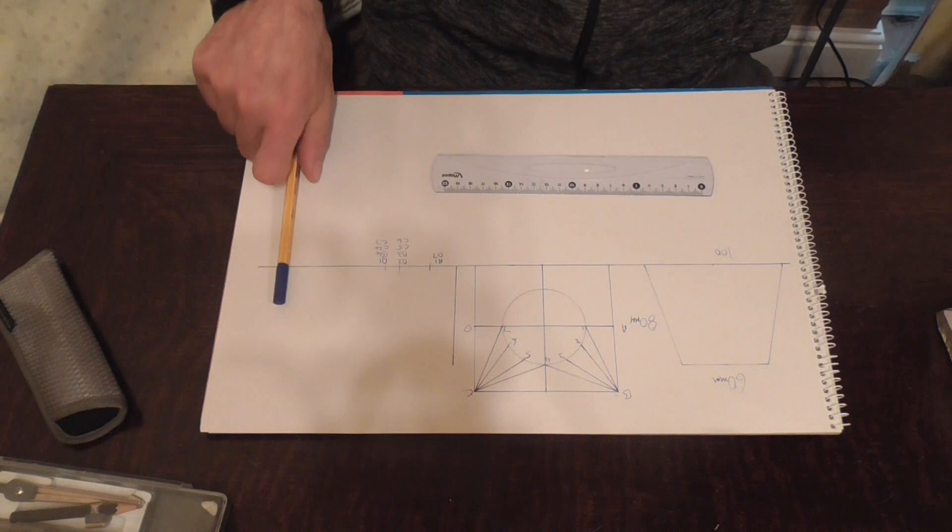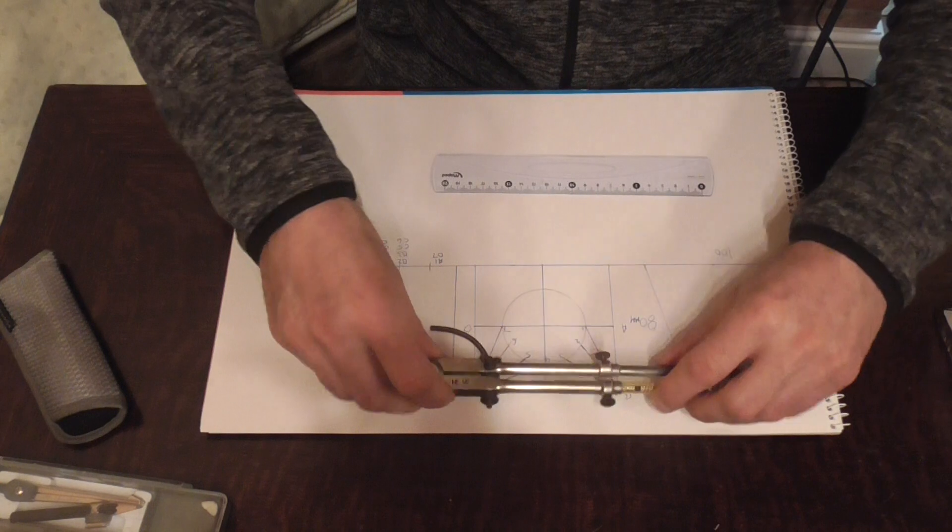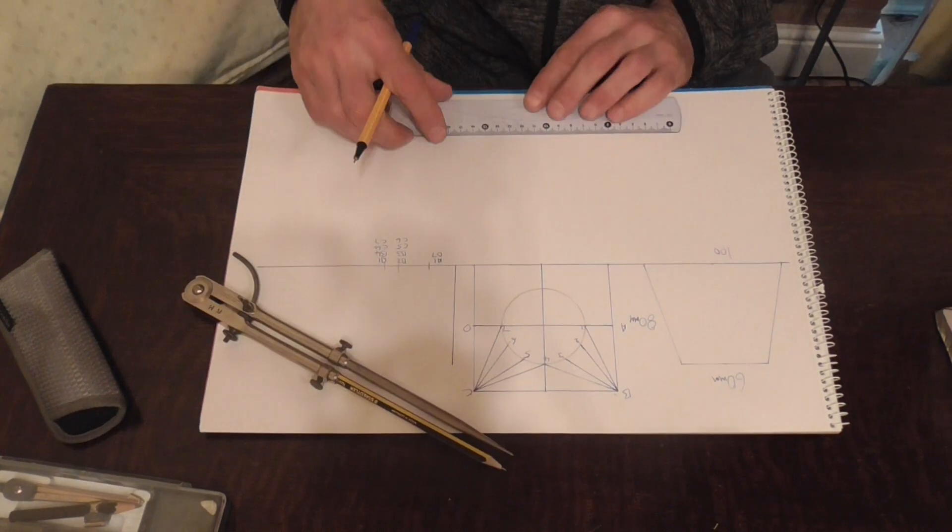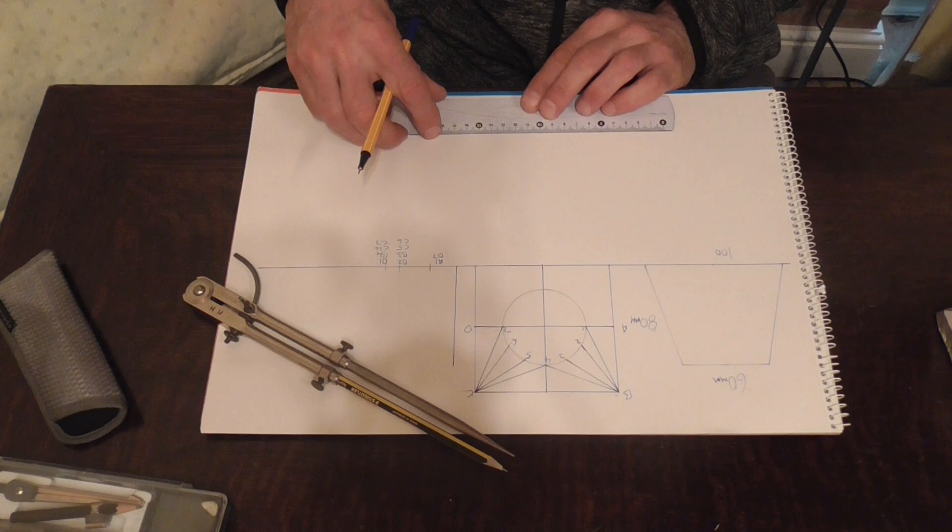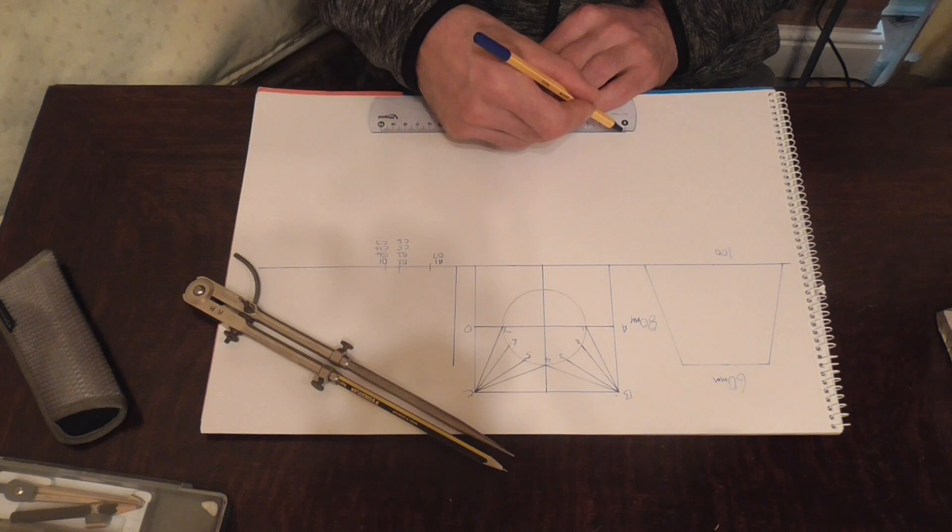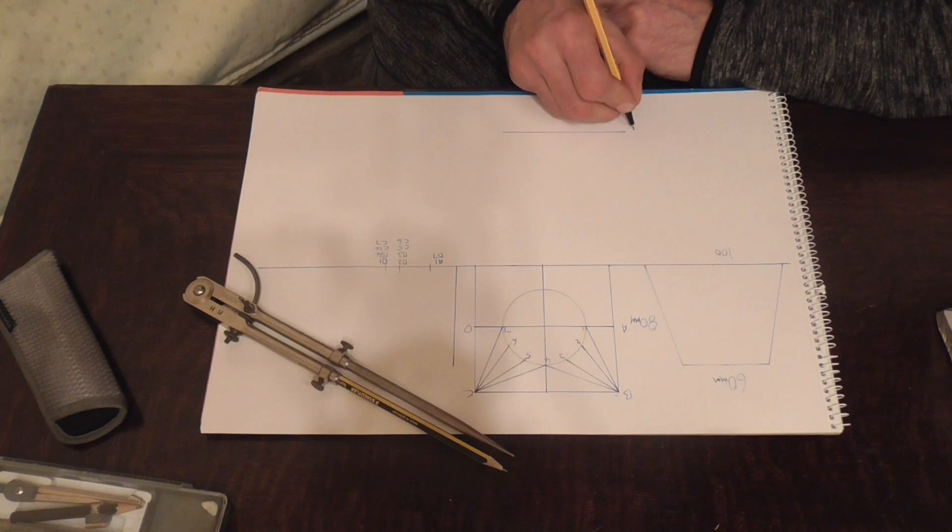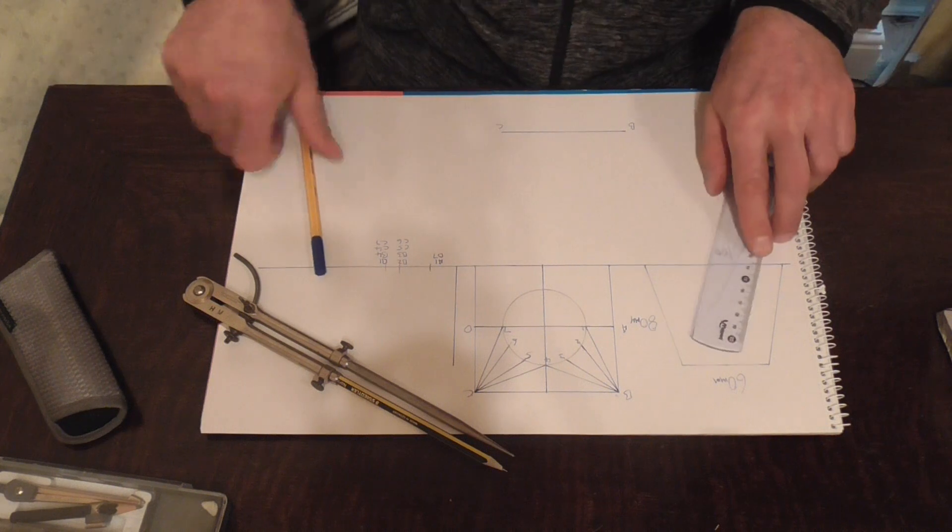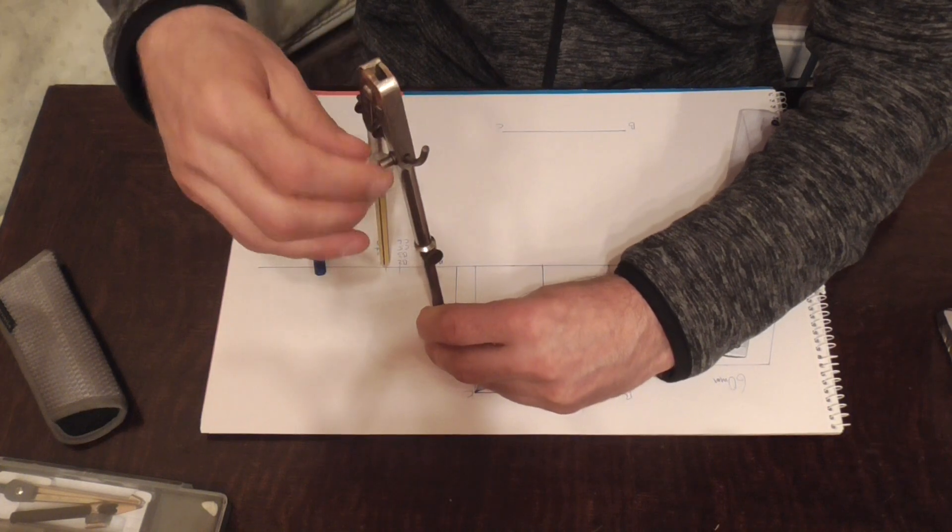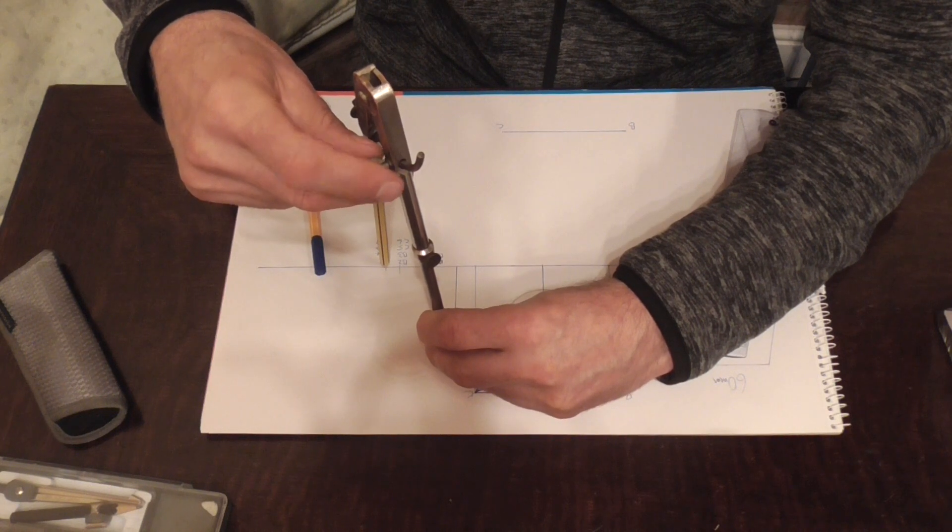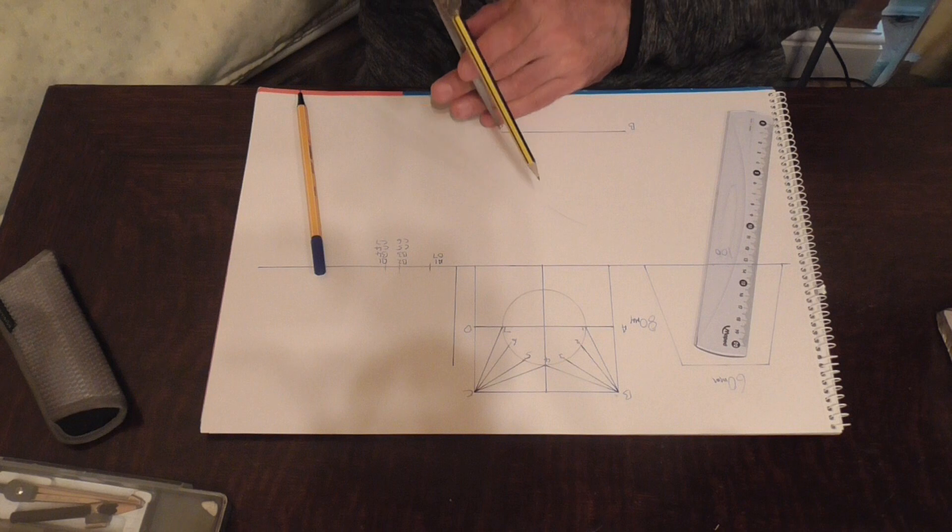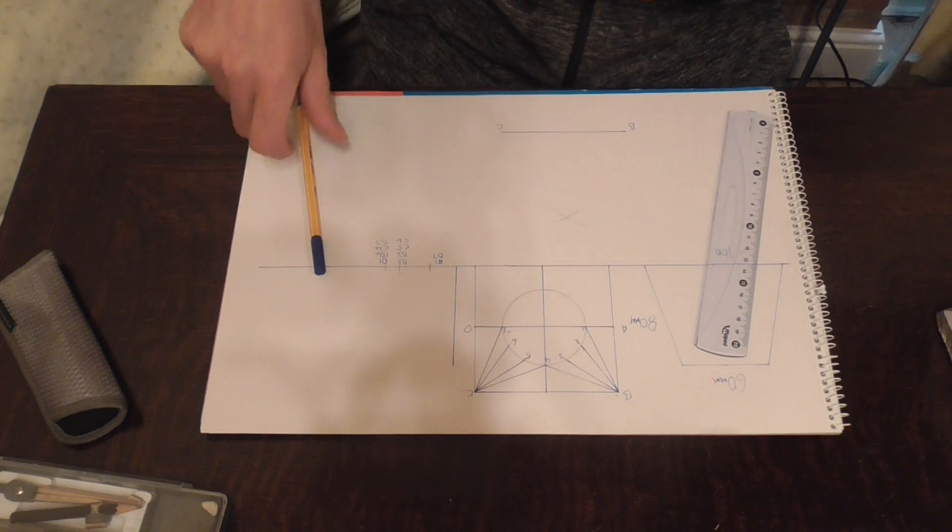Now we have all the information we need to start our square to round. So what we do is we draw in this line here, B2 and C6, which we know is 100mm. Next we open our dividers up to B1 and put an arc in. And the same on this side. And we label that B4.